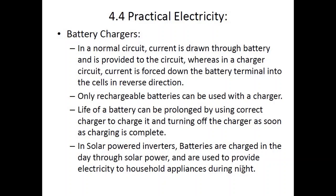Battery chargers work opposite to a normal circuit. Instead of a battery powering components, the charger takes electricity from the mains and provides it to a battery to recharge it. Only put rechargeable batteries in such a circuit, otherwise your charger or battery can blow up. Battery life can be extended by using the correct type of charger and turning it off as soon as charging is done. Another type uses solar panels to charge batteries during the day, which then power the household at night via an inverter system.